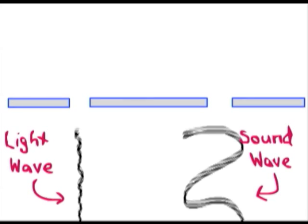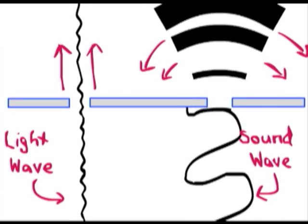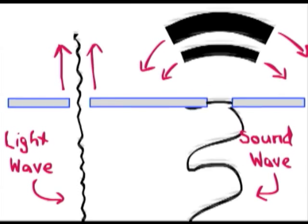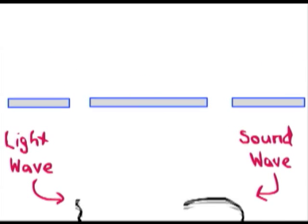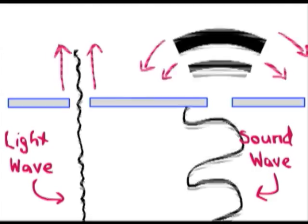This is the reason we can hear around corners but not see around them. Light has such a small wavelength and doesn't need to bend very much to get through. Sound, on the other hand, has a very large wavelength and needs to bend to get through the gap, but that also means it covers a larger area after the gap.